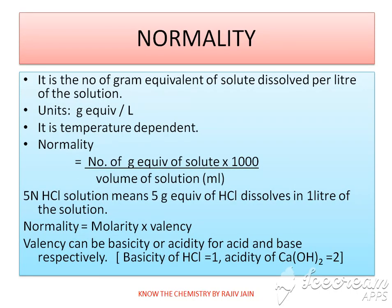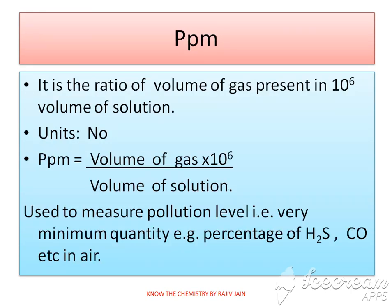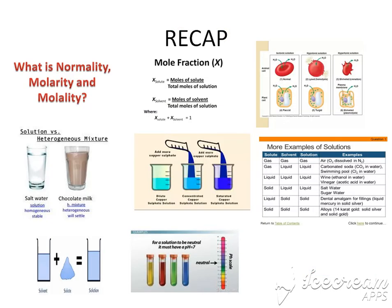Normality is the number of gram equivalents of solute dissolved per liter of solution; units are gram equivalents per liter, and it is temperature dependent. Mole fraction is moles of solute divided by total moles. PPM is volume of gas multiplied by 10 to the power 6 divided by volume of solution; it is used to measure pollution levels.